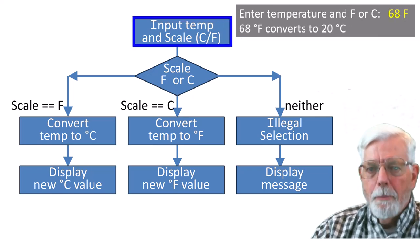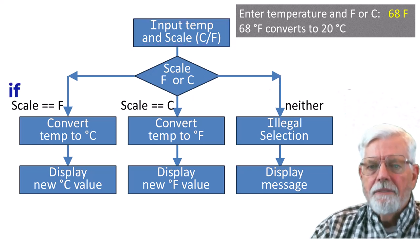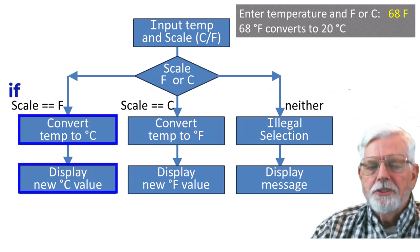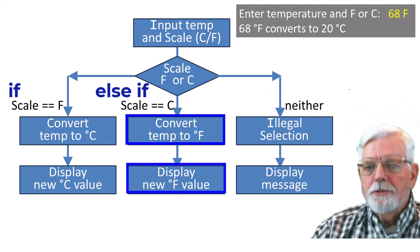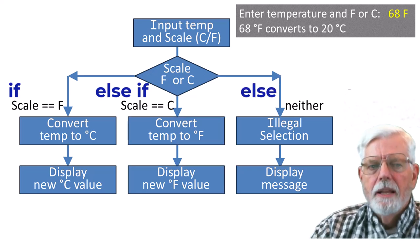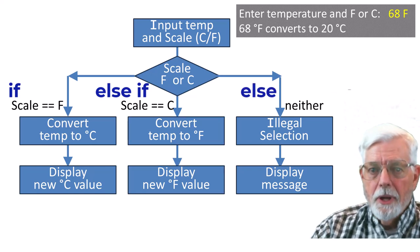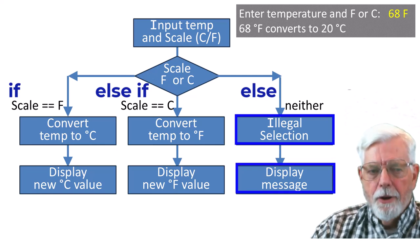Here is a flowchart for the program. The program displays a prompt message requesting a temperature and either F or C. If the scale input is F, then compute and display the Celsius temperature. If the scale input is C, then compute and display the Fahrenheit temperature. If neither F nor C were input, then display an error message.